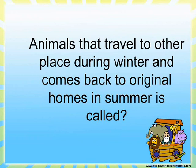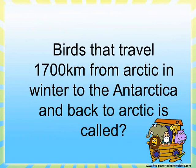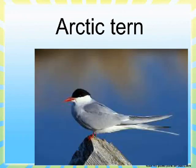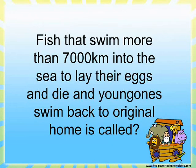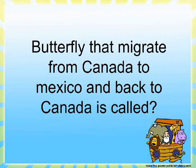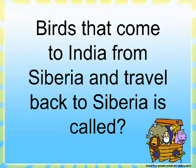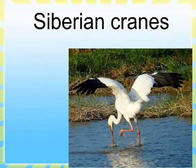Animals that travel to other places during winter and come back to their original homes in summer are called migration. Birds that travel 1,700 kilometers from the Arctic in winter to the Antarctica and back are called Arctic terns. Fish that swim more than 7,000 kilometers into the sea to lay their eggs and die, with the young ones swimming back to the original home, are called eels. Butterflies that migrate from Canada to Mexico and back are called monarch butterflies. Birds that come to India from Siberia and travel back are called Siberian cranes.